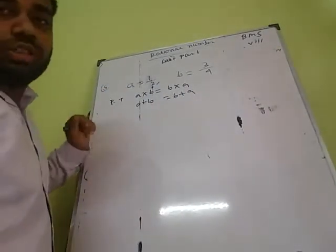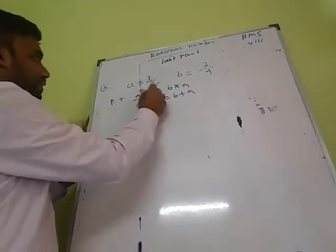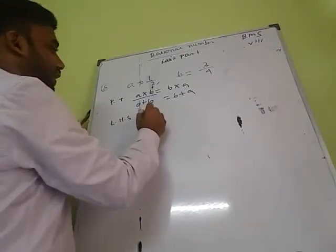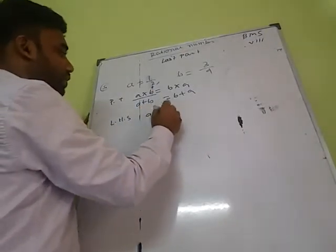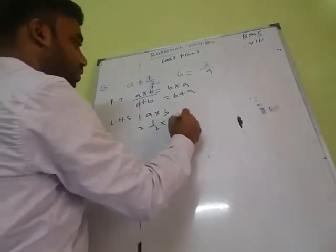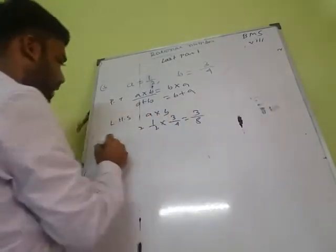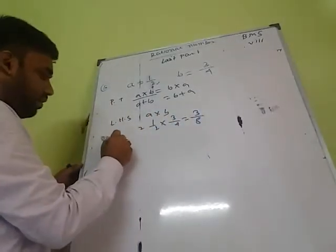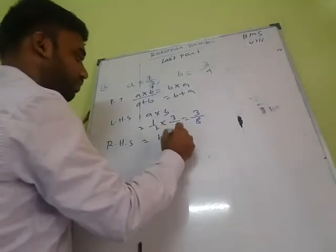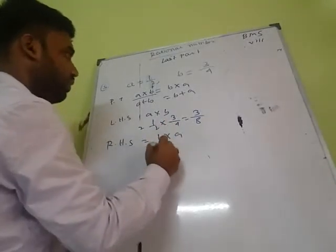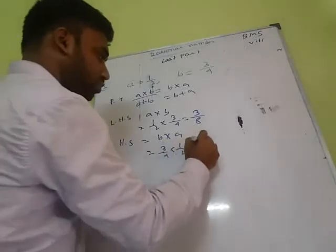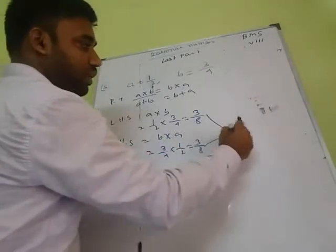To verify the commutative property, we find the LHS: A into B equals 1 by 2 into 3 by 4, which gives 3 by 8. For the RHS: B into A equals 3 by 4 into 1 by 2, which also gives 3 by 8. So LHS equals RHS, and both sides are equal.